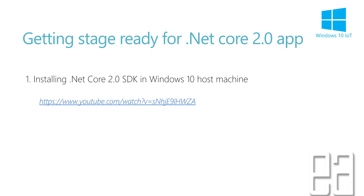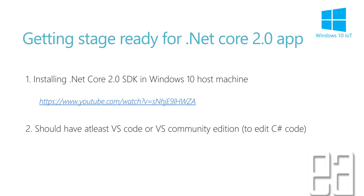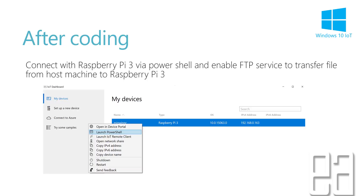Getting the stage ready for a .NET Core 2.0 app is pretty much exactly the same as we discussed in our previous video. All we have to do is install the .NET Core 2.0 SDK on our Windows 10 host machine, because we don't have a .NET Core 2.0 SDK in the Windows 10 IoT Core operating system yet. We also need an editor like Visual Studio Code or Visual Studio 2017 to edit the C# code. After coding is done, we connect to Raspberry Pi via PowerShell and enable the FTP service to transfer the files — which we already enabled in our previous video.